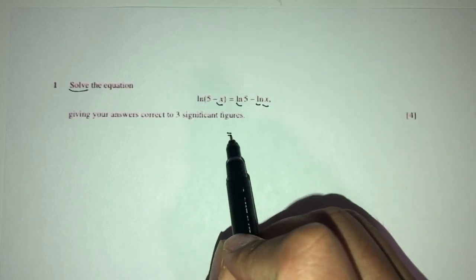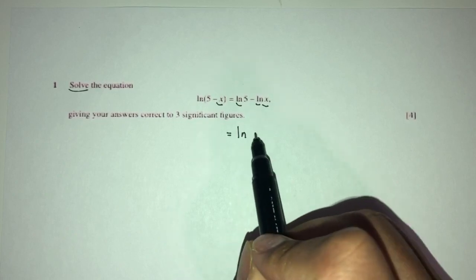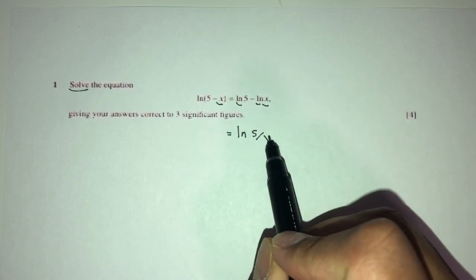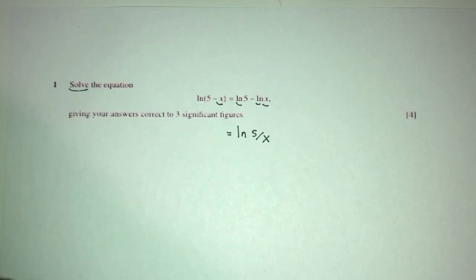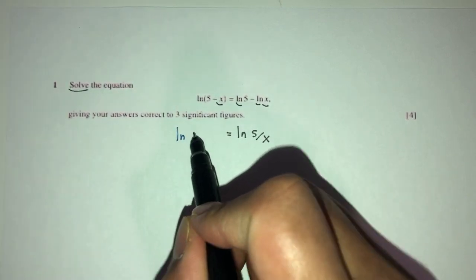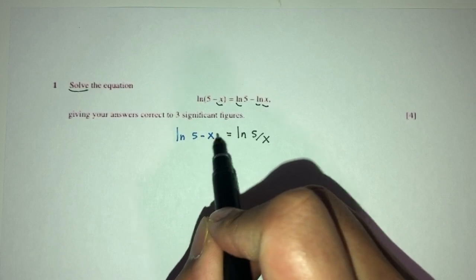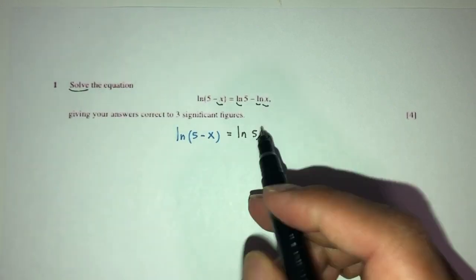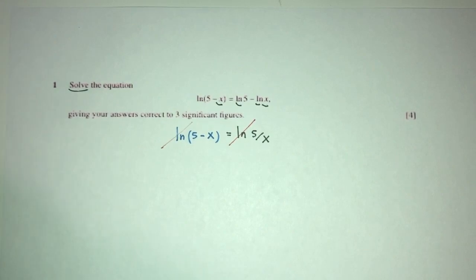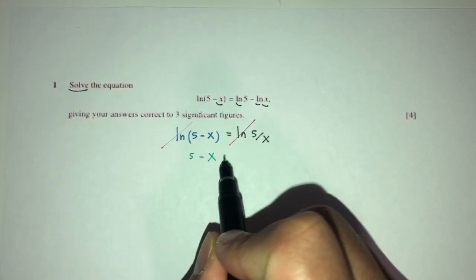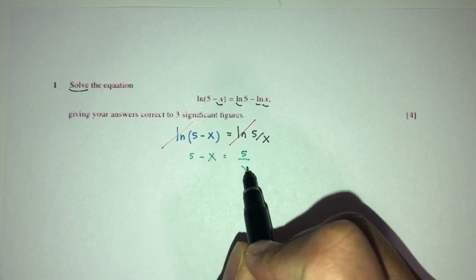We can combine them together. You have ln of 5, and here we have minus becoming divide of x. So we have ln of 5 minus x. Now, because we have ln on both sides, they cancel out. So you will have 5 minus x equal to 5 over x.